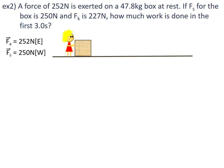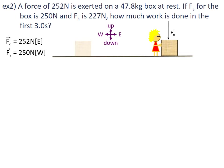So the box is, in fact, moving. We'll put in a coordinate cross and make east the direction the box is moving. Gravity is pushing down, normal force is pushing up. We've got an applied force of 252 newtons east and a kinetic force of friction equal to 227 newtons west.